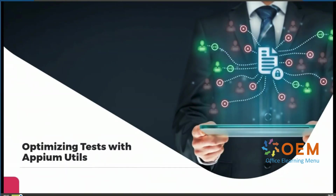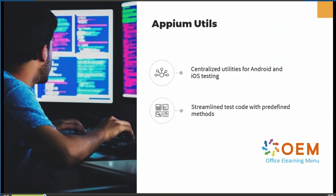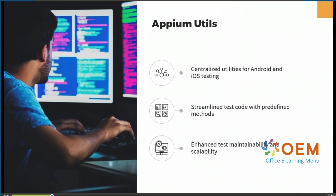In this video we are going to cover optimizing tests with RPM utils. RPM utils are centralized utilities for Android and iOS testing. They are used to streamline test code with predefined methods, and the goal of RPM utils is to enhance our test maintainability and scalability.